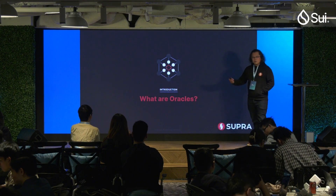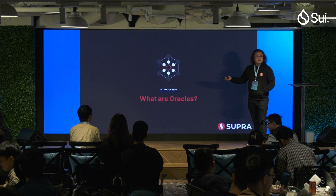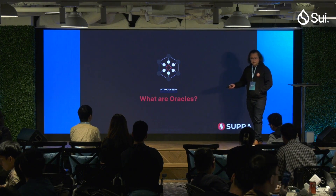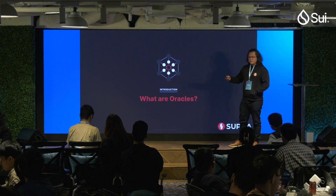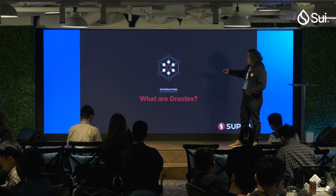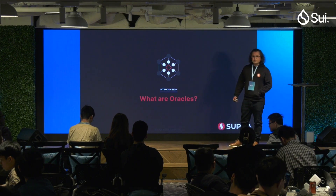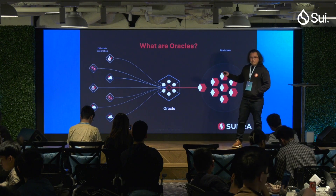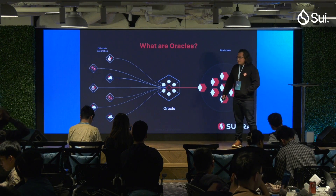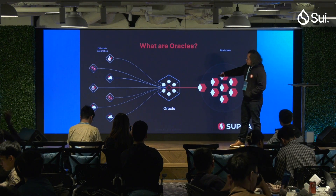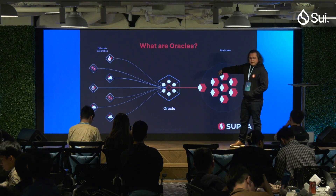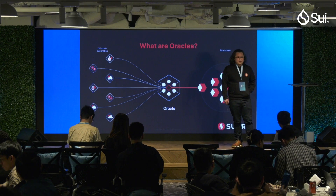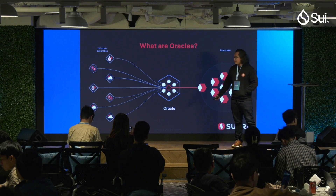So what are oracles? Blockchains don't actually communicate with the outside world — they don't communicate with each other — and you need something called oracles to do this. Oracles are actually a middleware. While this graphic shows just a small committee of nodes, our system is much larger and much more robust than this.